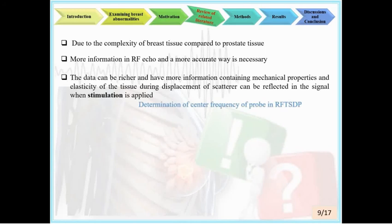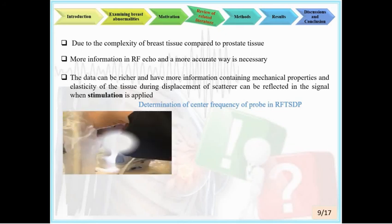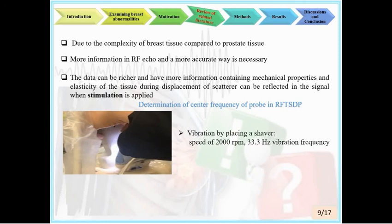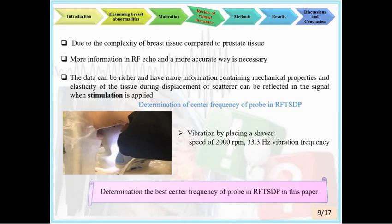In this paper, vibration was generated in the phantom by placing a shaver operating at 2000 RPM, causing a 33.3 Hz vibration frequency on the surface of the phantom at a 2 cm distance from the ultrasound probe. The figure shows how signals were recorded with the probe and shaver. Further evaluation of depth, distance, and frequency effects on classification accuracy was examined in the proposed idea.